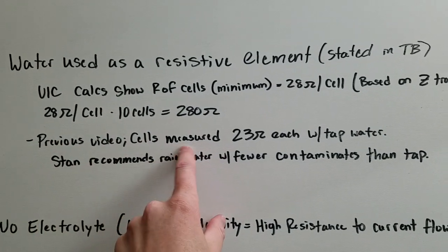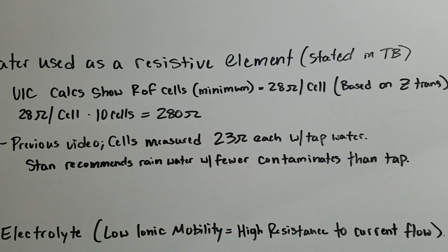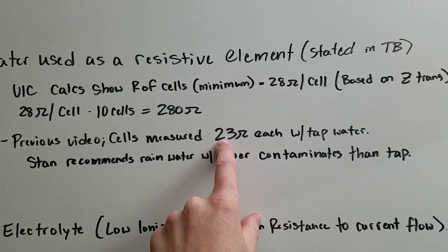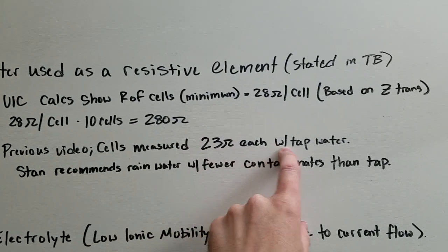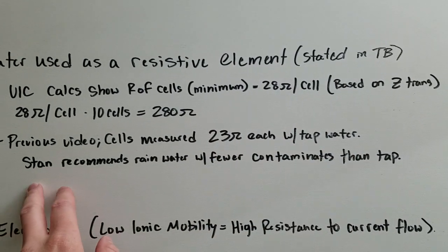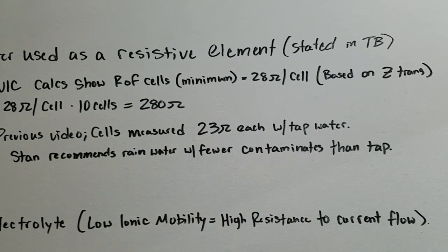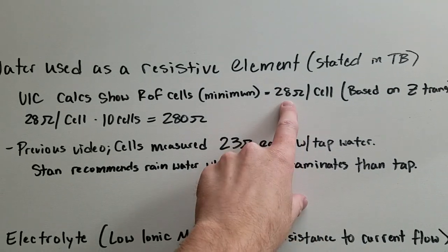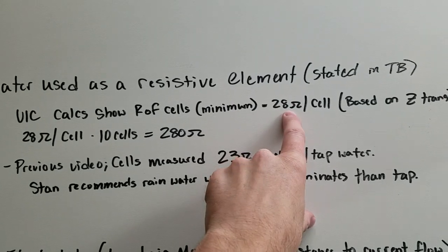Now in a previous video, I measured my cells, which are almost identical in geometry to Stan's, and I get 23 ohms with tap water. So Stan recommends using rainwater, or maybe the water that he used had fewer contaminants. So that's why he designed his for 28 ohms per cell minimum.